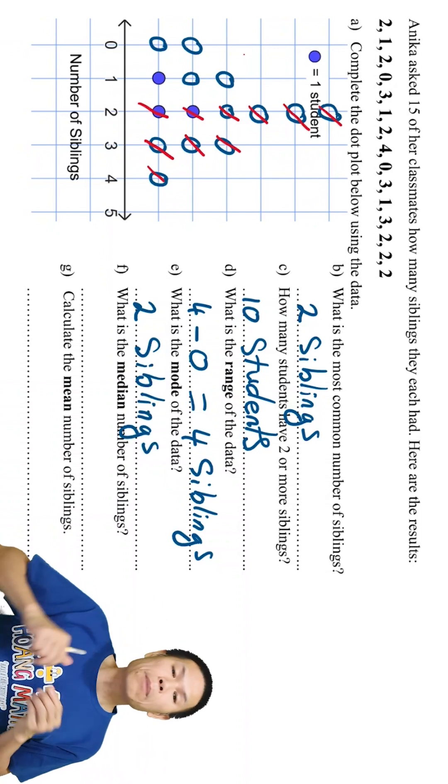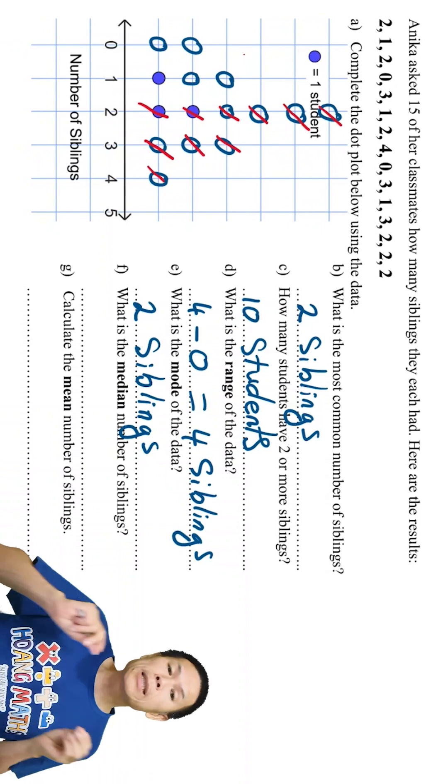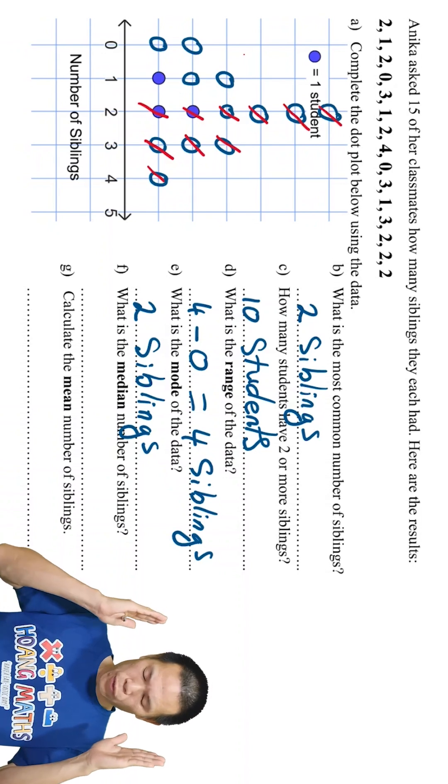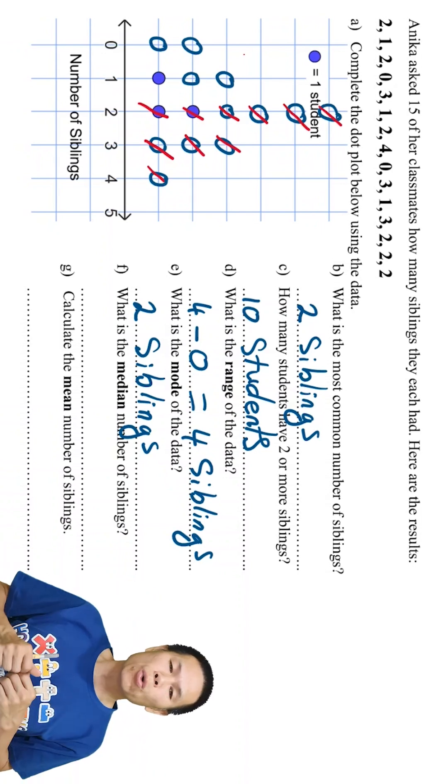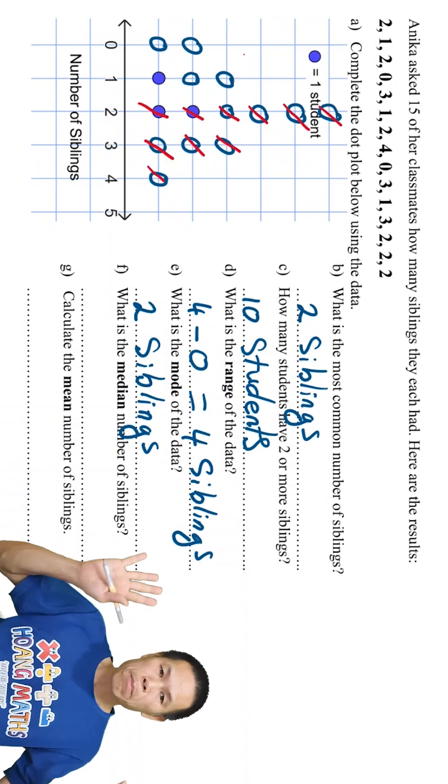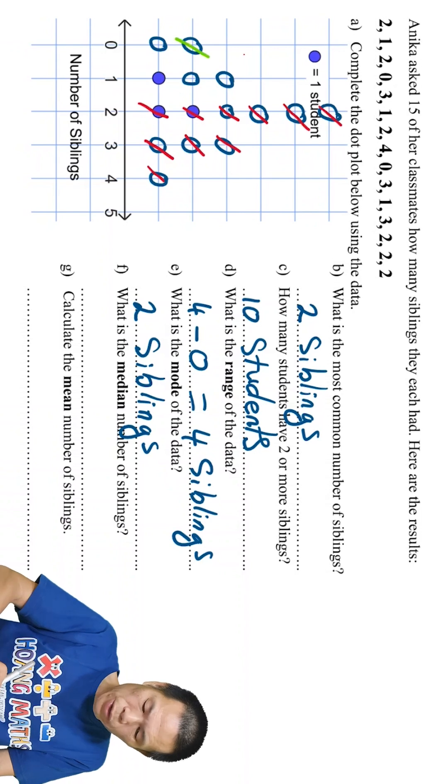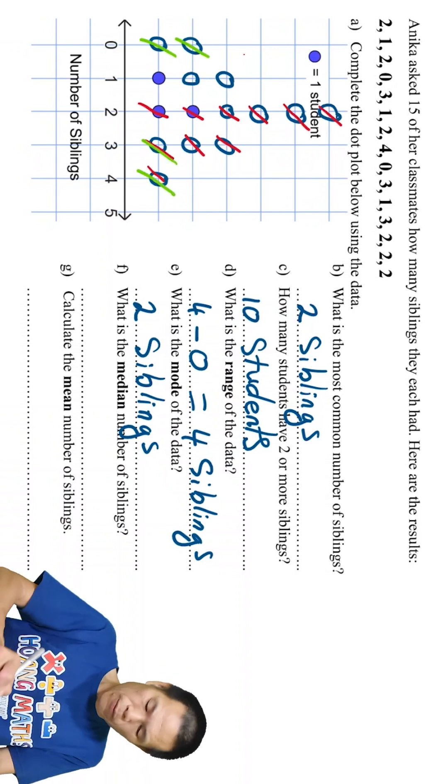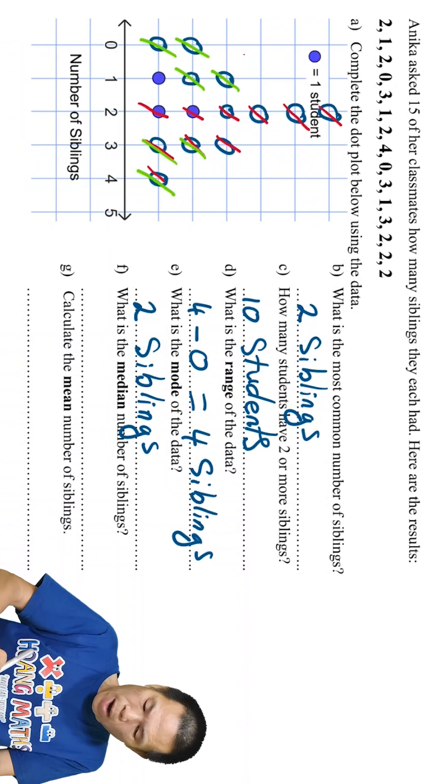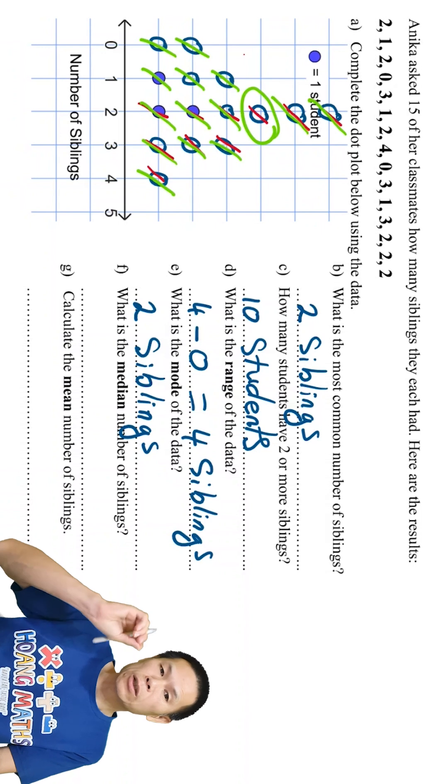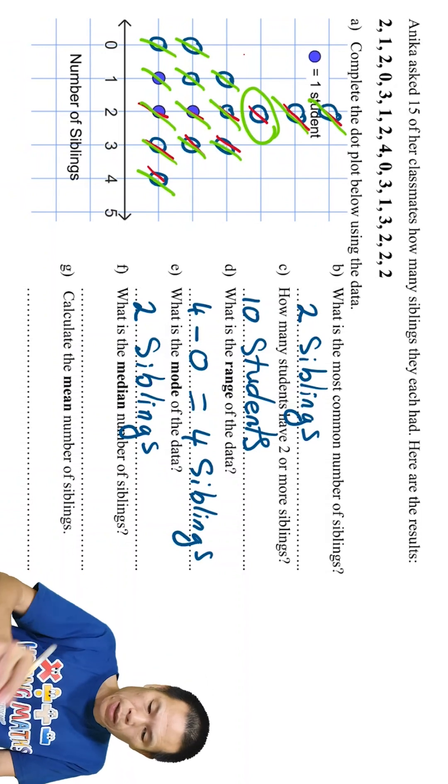Part F: what is the median number of siblings? So median is the middle score, and the data must be in order. Okay, keep that in mind. So for the dot plots here, of course it's already in order, so we just cross out the minimum and the maximum score, and then whatever left in the middle, that is the median. So we have 1, 2, 1, 2, and we have 1, 2. We cross out 1, 1, 2, we cross out 1, and then we cross out this 1, we cross out this 1, we cross out this 1, 1. So this mean here, this is the median. So the median is 2, so that is 2 siblings.